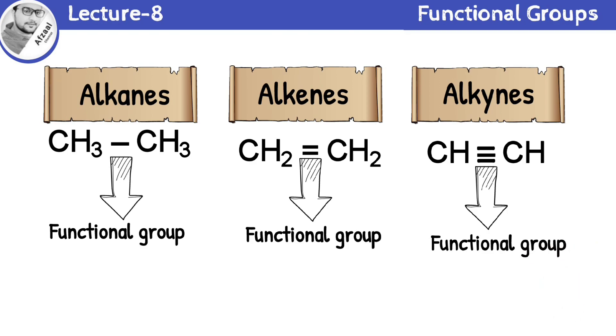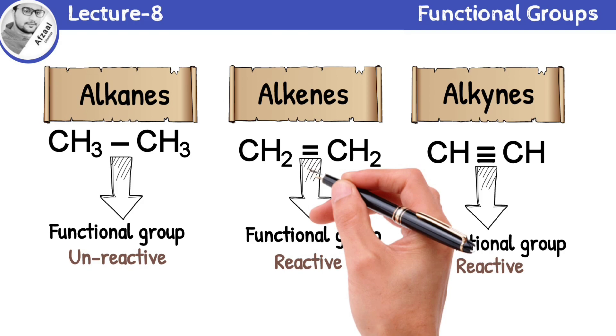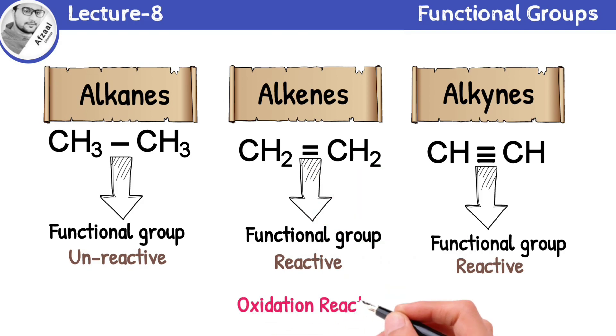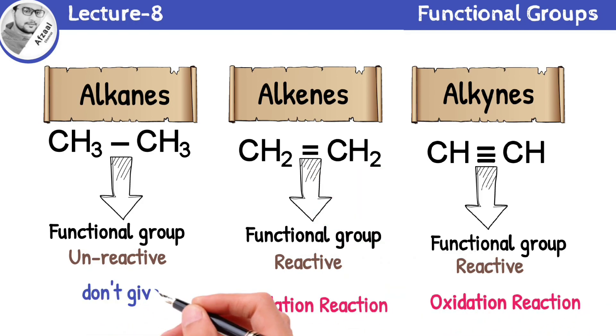Alkanes are relatively unreactive due to their single bonds, while alkenes and alkynes are more reactive because of their double and triple bonds. For example, alkenes and alkynes give oxidation reactions, while alkanes do not give this reaction because single bonds between carbon atoms make them highly stable.